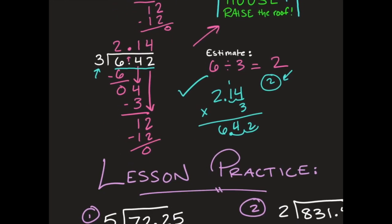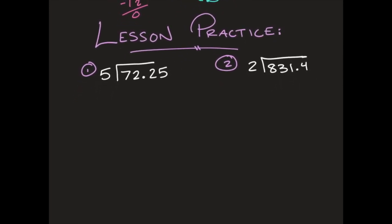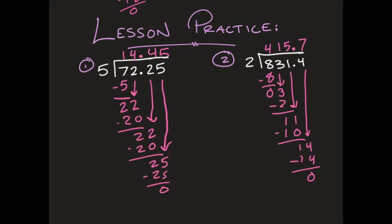Now we'll move on to lesson practice. I have two problems — I'll set them up, then pause the video and try them yourself, then check your work when you're finished. For number one I got 14 and 45 hundredths, and for number two, 415 and 7 tenths. If you got one wrong, double-check your work against mine to find your mistake and try again. That's dividing decimals by whole numbers.